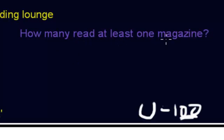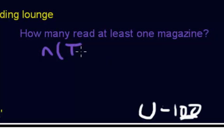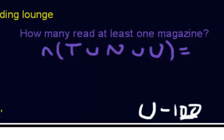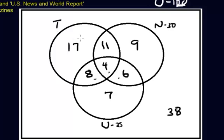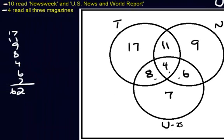How many read at least one magazine? If you read at least one, you can be in Time, Newsweek, or U.S. News and World Report — any one of these circles counts. You can read one, two, or all three; it doesn't matter as long as you're in one of the three circles. Adding all the numbers inside the circles, which we already did, the answer is 62.